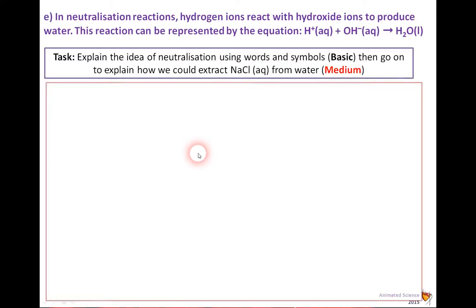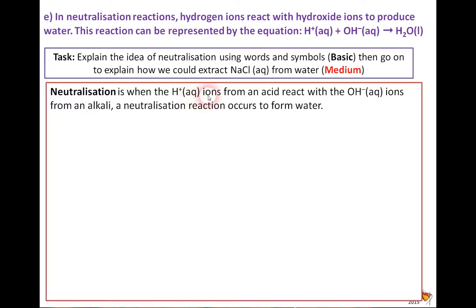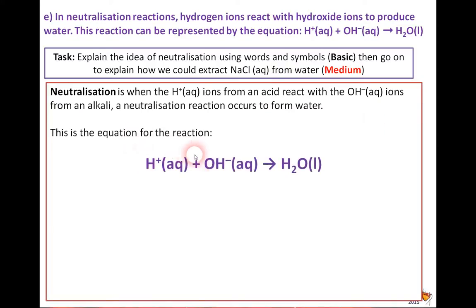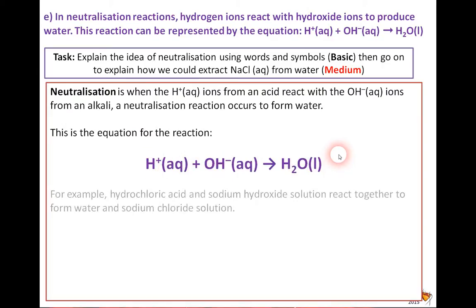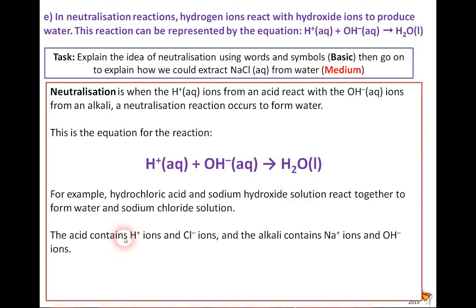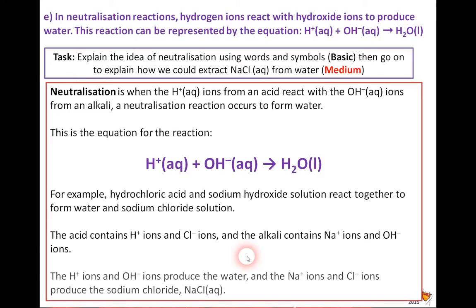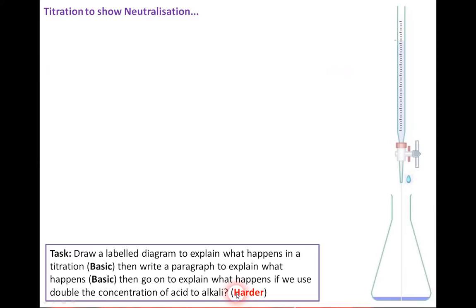Neutralisation is when H⁺ ions from an acid react with OH⁻ ions from an alkali to form water. For example, hydrochloric acid and sodium hydroxide react together to form water and sodium chloride. The acid contains H⁺ and Cl⁻ ions; the alkali contains Na⁺ and OH⁻ ions. The H⁺ and OH⁻ ions produce water, and the Na⁺ and Cl⁻ ions produce sodium chloride, NaCl(aq). If you boil off the water, you're left with salt — that's the important idea.